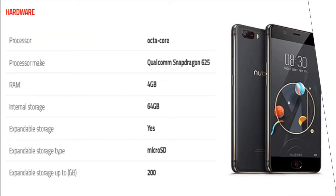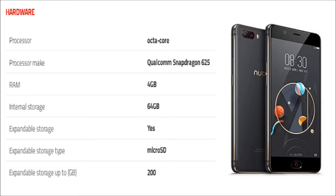The phone is powered by Octa-Core Qualcomm Snapdragon 625 processor, and it comes with 4GB of RAM. The phone packs 64GB of internal storage that can be expanded up to 200GB via microSD card.